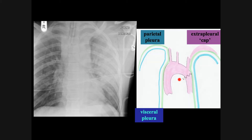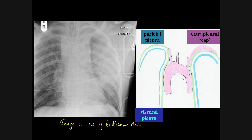In the case of aortic transection, the blood that is in the mediastinal space widens the mediastinum and then tracks superficial to the parietal pleura — which is the green structure — and forms the so-called apical pleural cap.